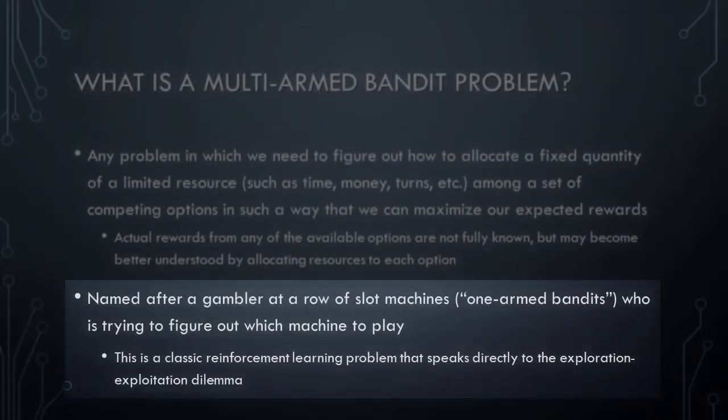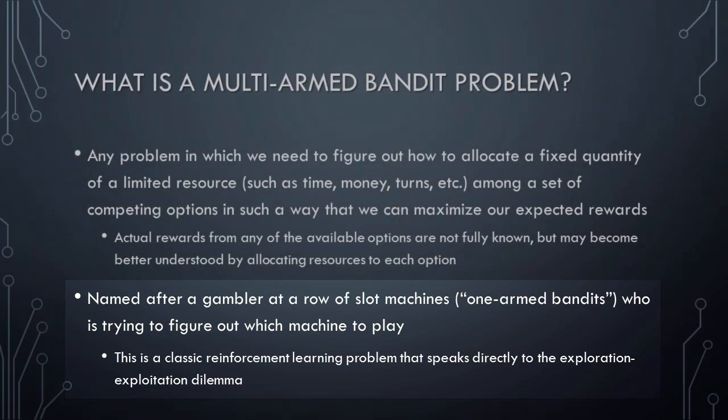Note that this is a classic reinforcement learning problem that speaks directly to the exploration-exploitation dilemma. How many times should the gambler play each machine? If the gambler has found a machine that seems to pay out reasonably often, should she continue playing that machine — that is, should she exploit what she already knows? Or should she try playing a different machine in the hopes that the new machine will be even better? That is, should she risk possible losses by exploring other options?